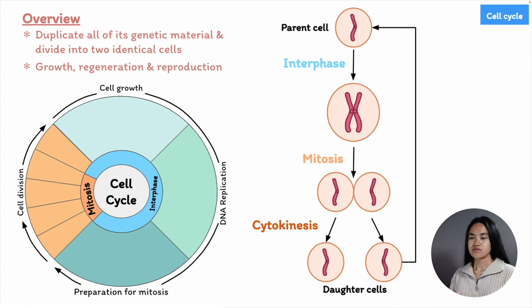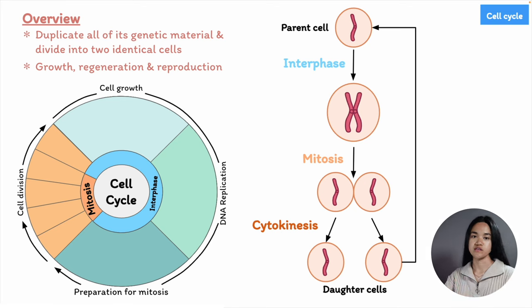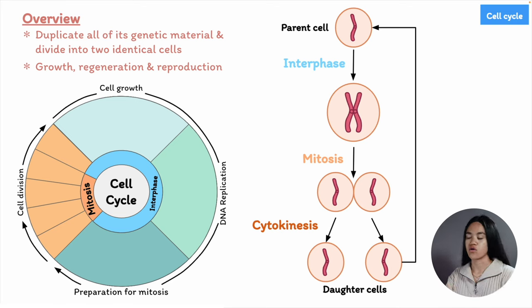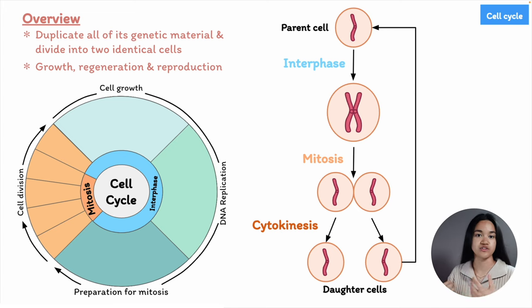Before we break down interphase, let's review how the genetic material is organized, because we're talking about the distribution of identical genetic material to two identical daughter cells. If there are any mistakes during copying or unequal distribution of the genetic material between cells, it can produce dysfunctional cells that may lead to certain diseases, and we don't want that.